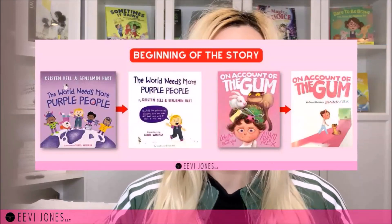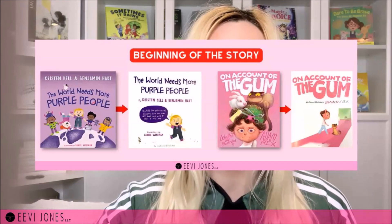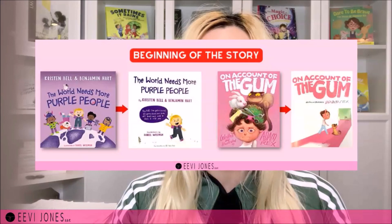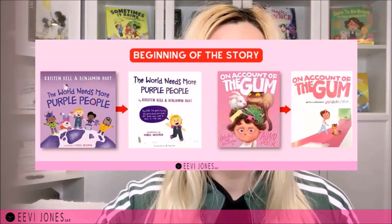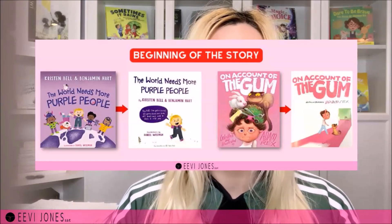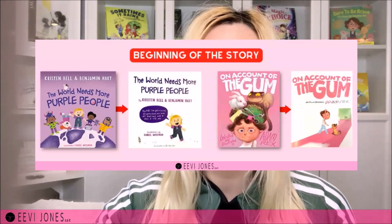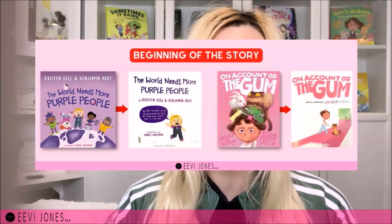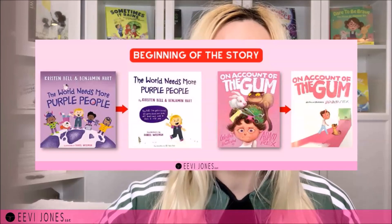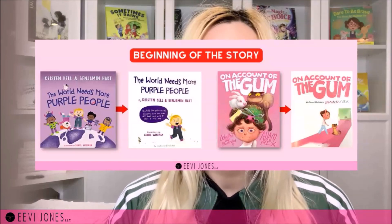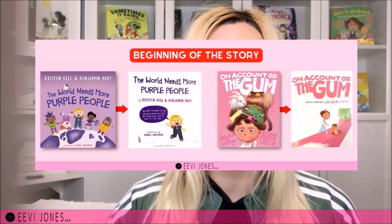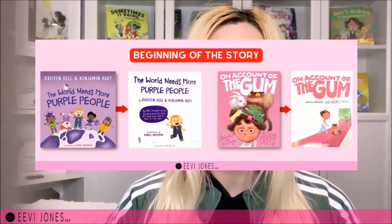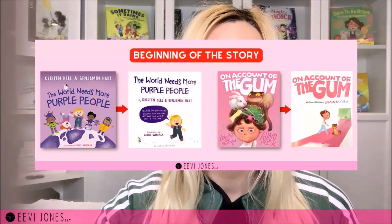The seventh layout idea is to have your story begin directly on the title page, either with or without wording. With wording: The World Needs More Purple People by Kristen Bell and Benjamin Hart has the normal title page elements, but the story actually begins here with the main character speaking directly to readers. Without wording: On Account of the Gum by Adam Rex shows the title lettering exactly as on the cover, and we see the main character walking with a hand in his hair — already hinting at what he may find on his head — so the story jumps in visually right away.